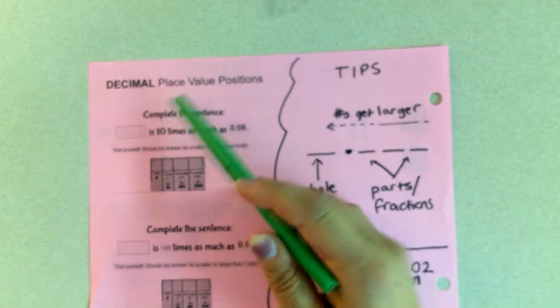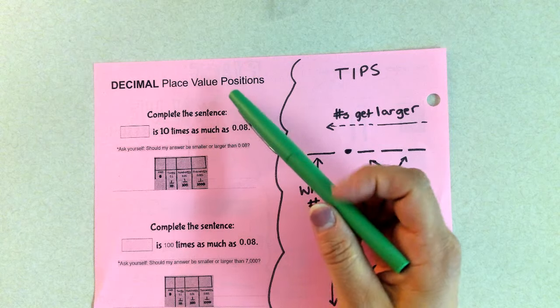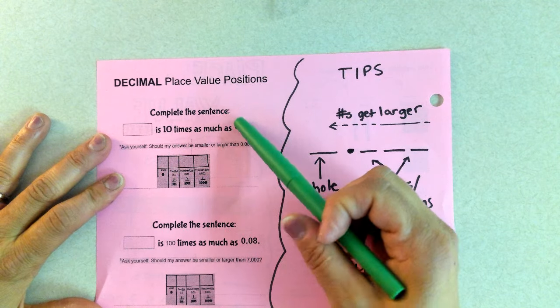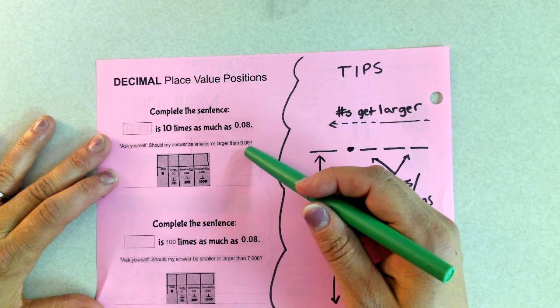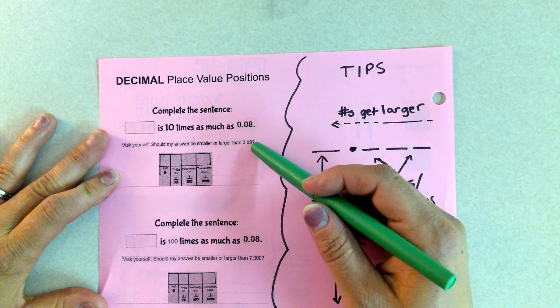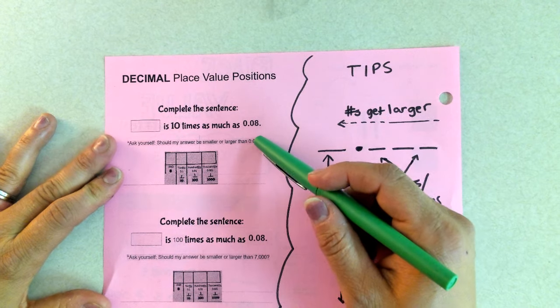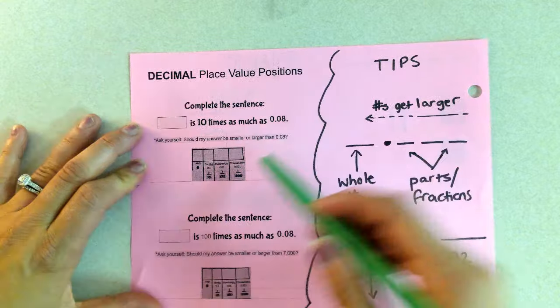We are on the side that says decimal place value positions. I know we have already done this in class. This is a review for you because I told you this is one of the most difficult things I teach all year. So we're going to do a quick review. Please follow along with me. If at any time you need extra time to process, pause, play it back, do what you need to do.